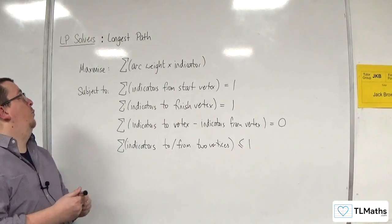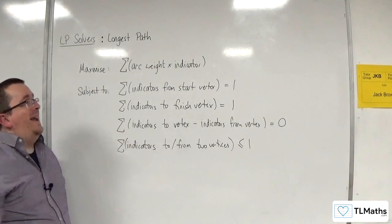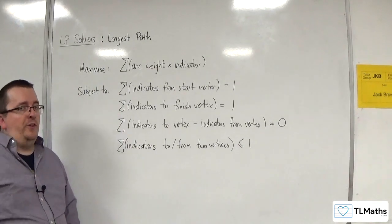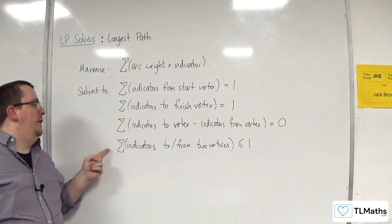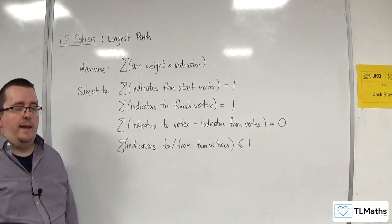So that is how we can formulate an LP solver for a longest path problem. Very similar to the shortest path problem. It's just maximized rather than minimized, and you've got these extra constraints on any potential repeating edges.